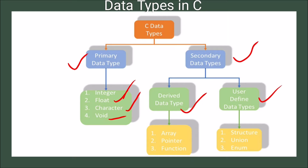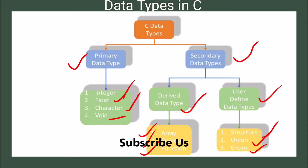In derived data type, there are three data types: array, pointer, and function. And in user-defined data types, again there are three data types: structure, union, and enum. Let us now discuss in detail what is actually primary data type and what is actually secondary data types.